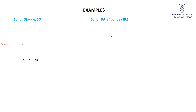And sulfur tetrafluoride: put in all those single bonds. The sulfur is drawn happy with two, four, six, eight. The fluorines each need six electrons — three lone pairs. That's our step three for SF₄.